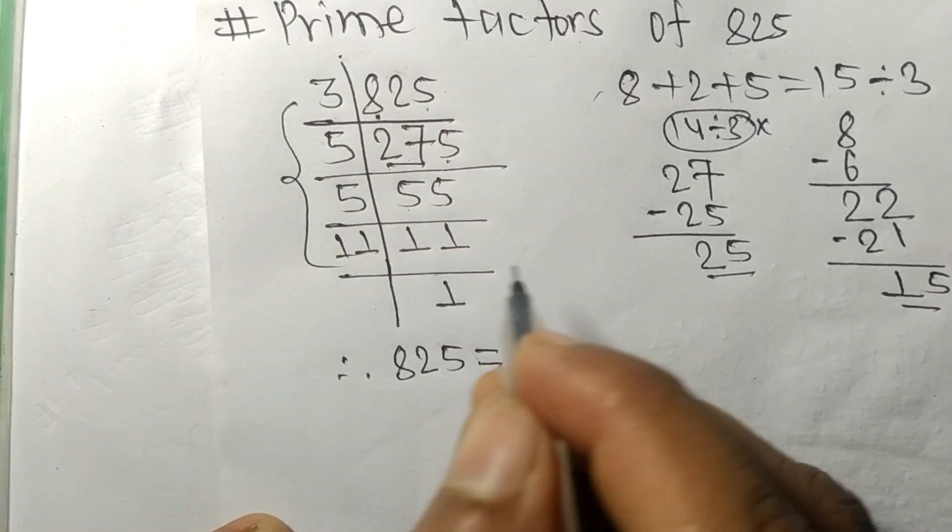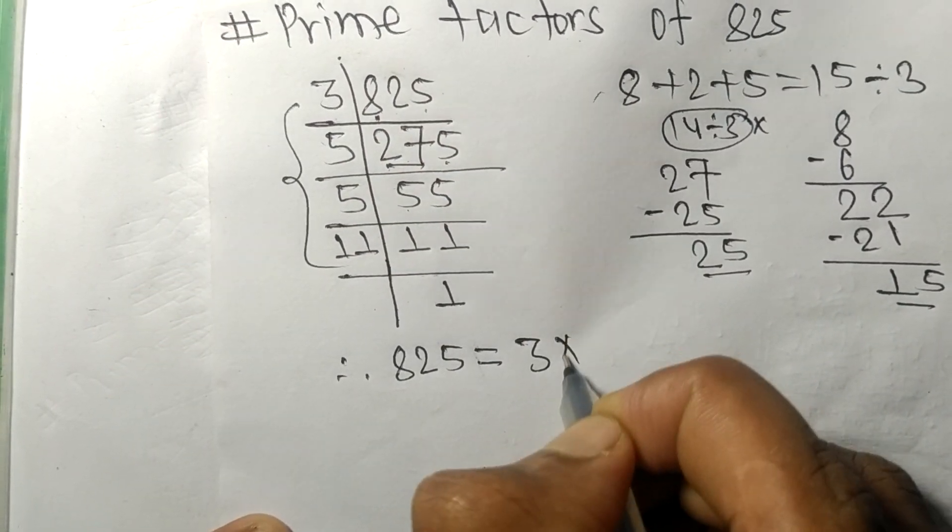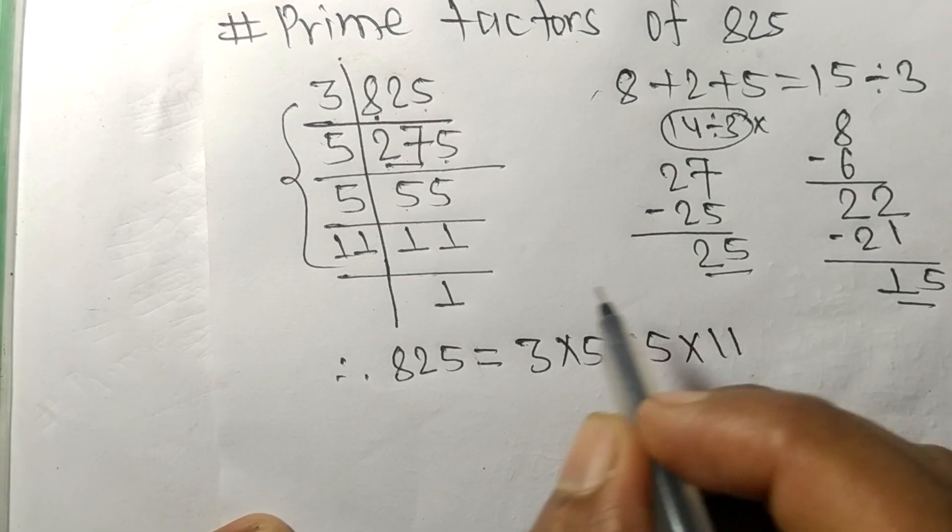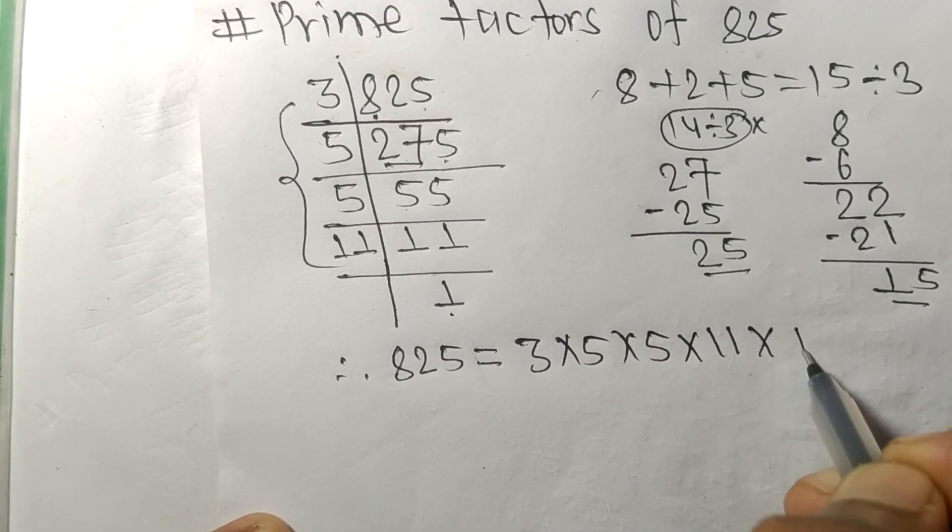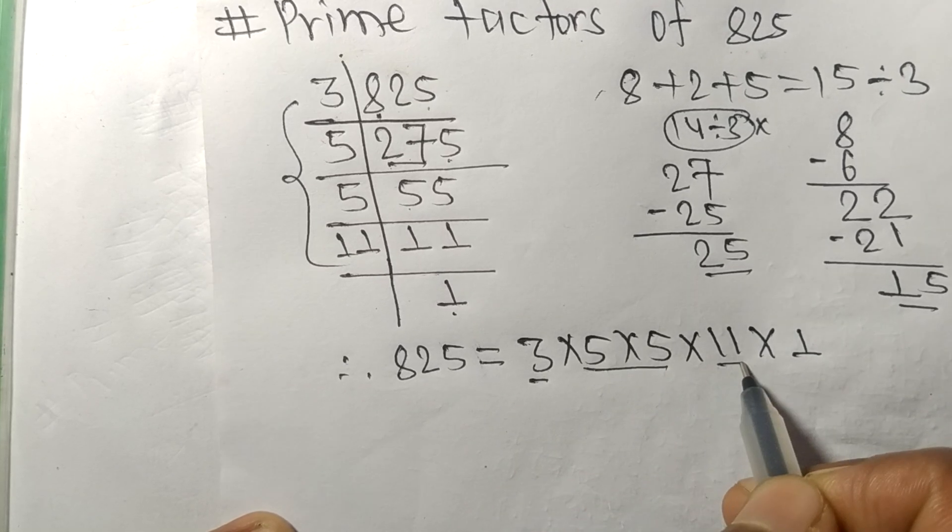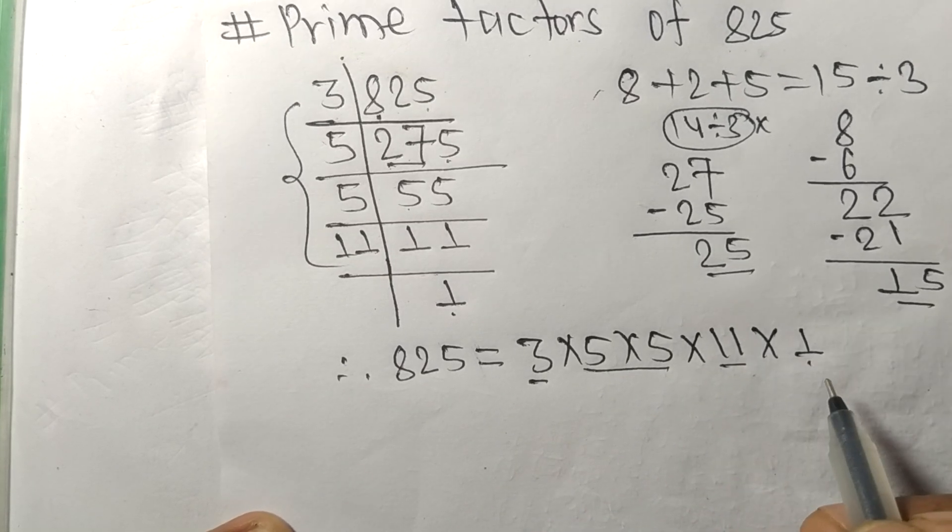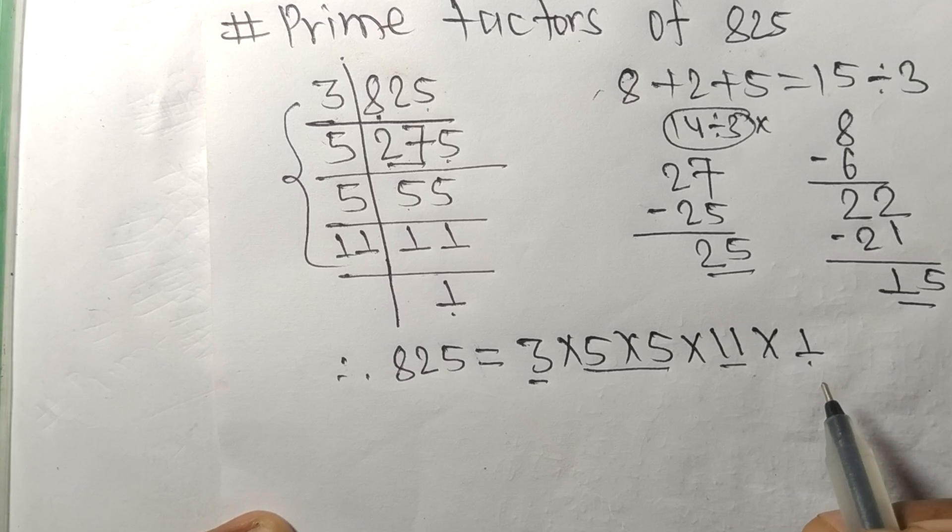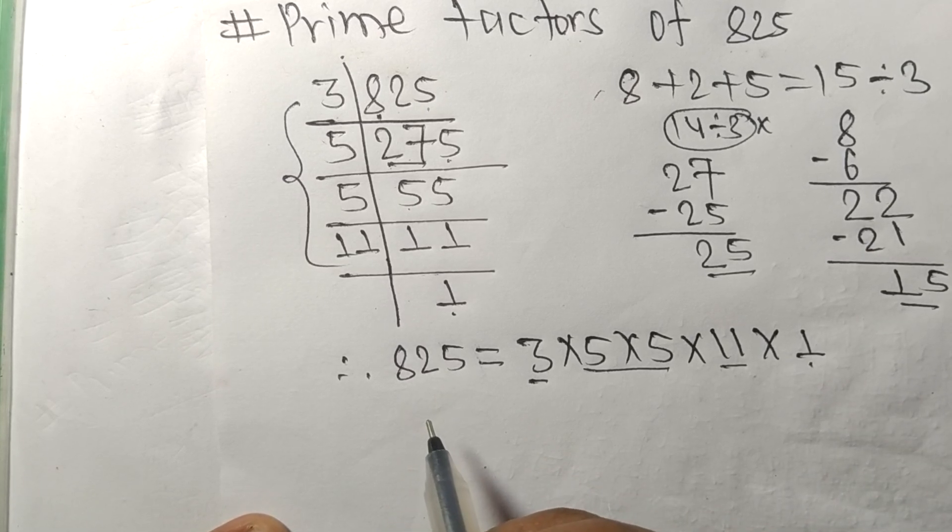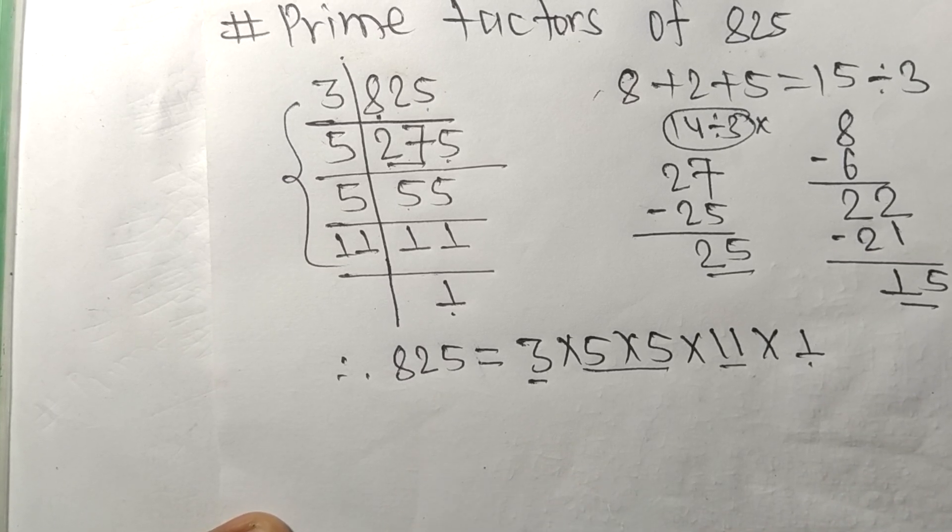Therefore 825 is equal to, from this side, 3 times 5 times 5 times 11. From here it is 1, so 3, 5, 11, and 1 are the prime factors of 825. So this much for today and thanks for watching.